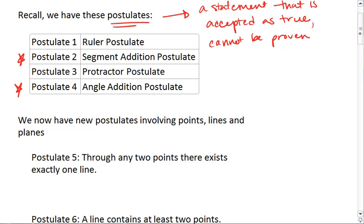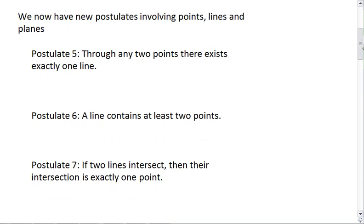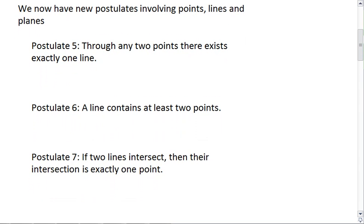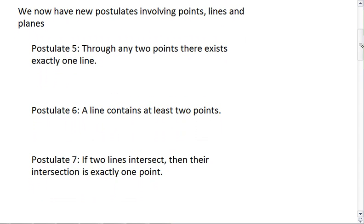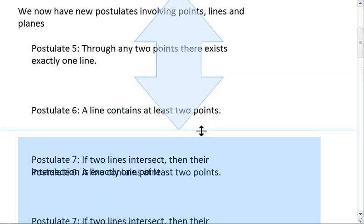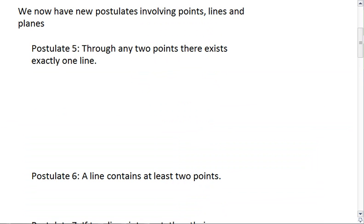Let's look at some new postulates. These are postulates involving points, lines, and planes. First, we have postulate 5, and postulate 5 tells me that through any two points, there exists exactly one line.